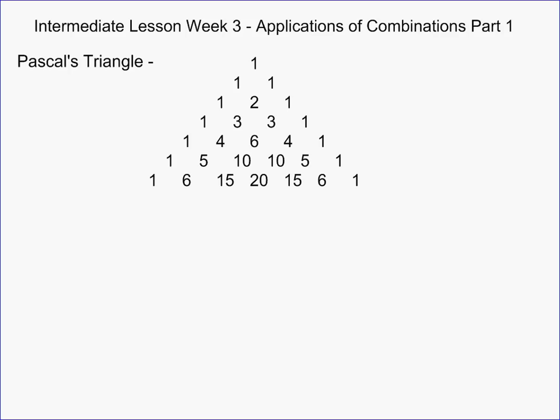The first one deals with Pascal's Triangle. If you don't know about Pascal's Triangle, what you notice everywhere is that the two numbers above a number add up to that number. So 1 plus 2 is 3, 2 plus 1 is 3. For instance, 15 comes because 5 plus 10 equals 15, and 10 plus 10 equals 20. And that in and of itself is an interesting thing.